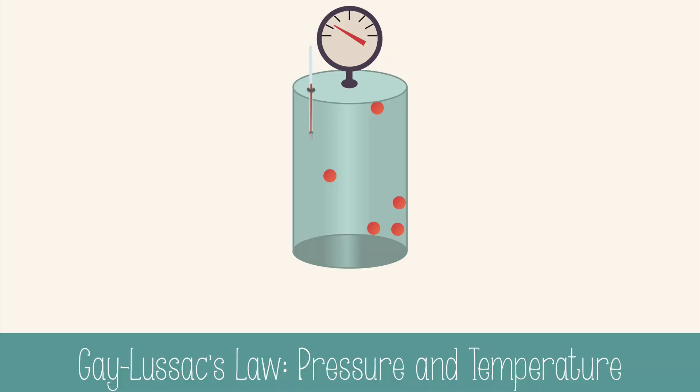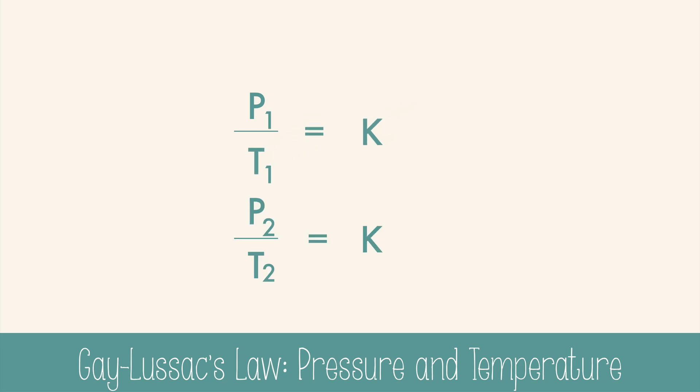The next law looks at pressure and temperature, keeping moles and volume constant. And sometimes it's called Gay-Lussac's law. We know that when temperature increases, pressure also increases. This is a direct relationship, which means the variables will be on opposite sides of the equation. Pressure equals temperature times the constant. Just rearrange a little. And now when we compare the before and after, we use substitution again to get Gay-Lussac's law.